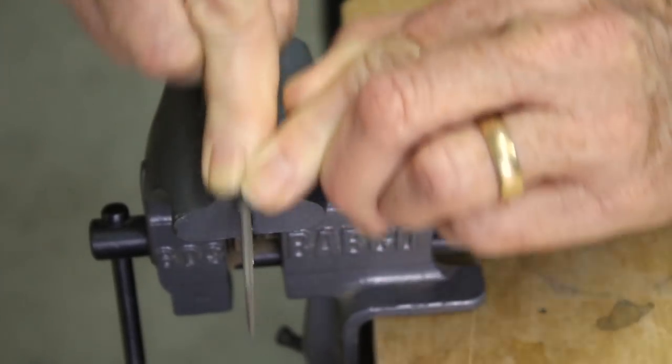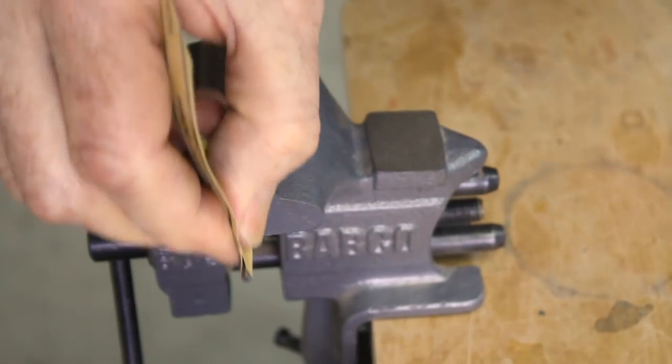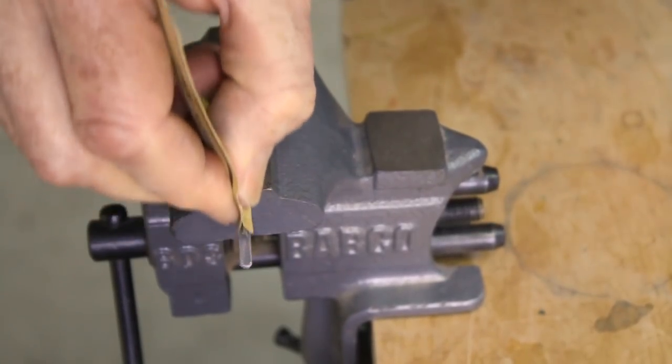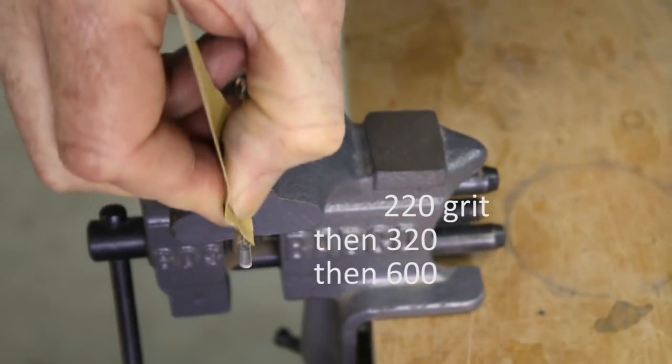When you have excavated enough steel to form the general shape, use sandpaper wrapped around a small drill bit to smooth out the file marks. Again, 220 to 320 to 600 grit.